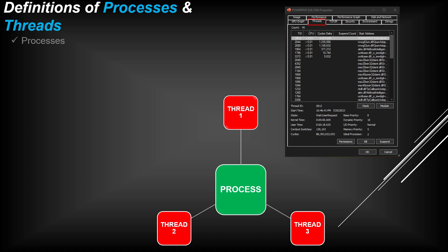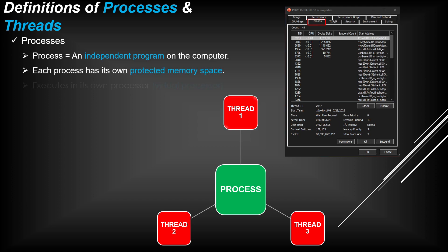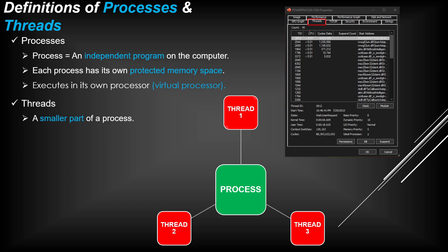Let's see the definition of Processes and Threads. A process is an independent program on the computer — each process has its own protected memory space and executes in its own virtual processor. A thread is a smaller part of a process; a thread exists inside a process. As shown in the example, we have PowerPoint executable as a process, and inside this process we have threads. We can check this in Process Explorer or Process Hacker — task managers with more details.